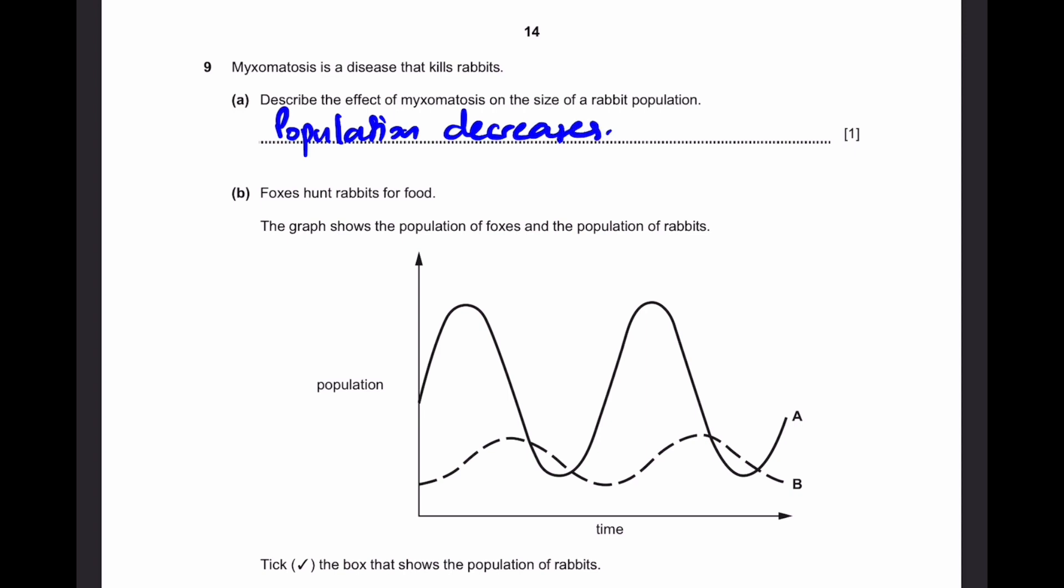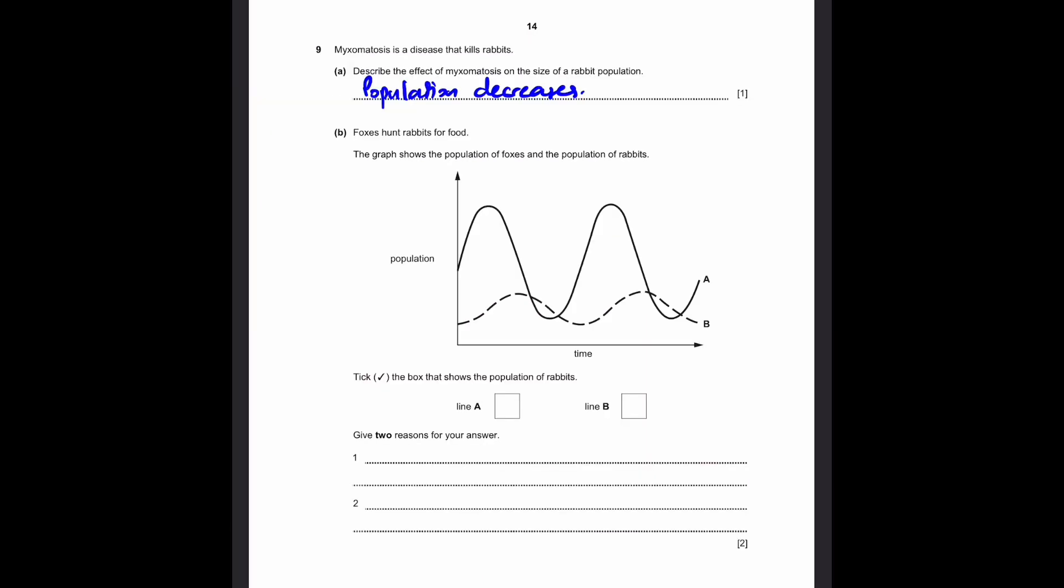Part B. Foxes hunt rabbits for food. The graph shows the population of foxes and the population of rabbits. The population changes as time goes on. Tick the box that shows the population of rabbits. Give two reasons for the answer. Well the answer is that line A is the rabbits. Give two reasons.